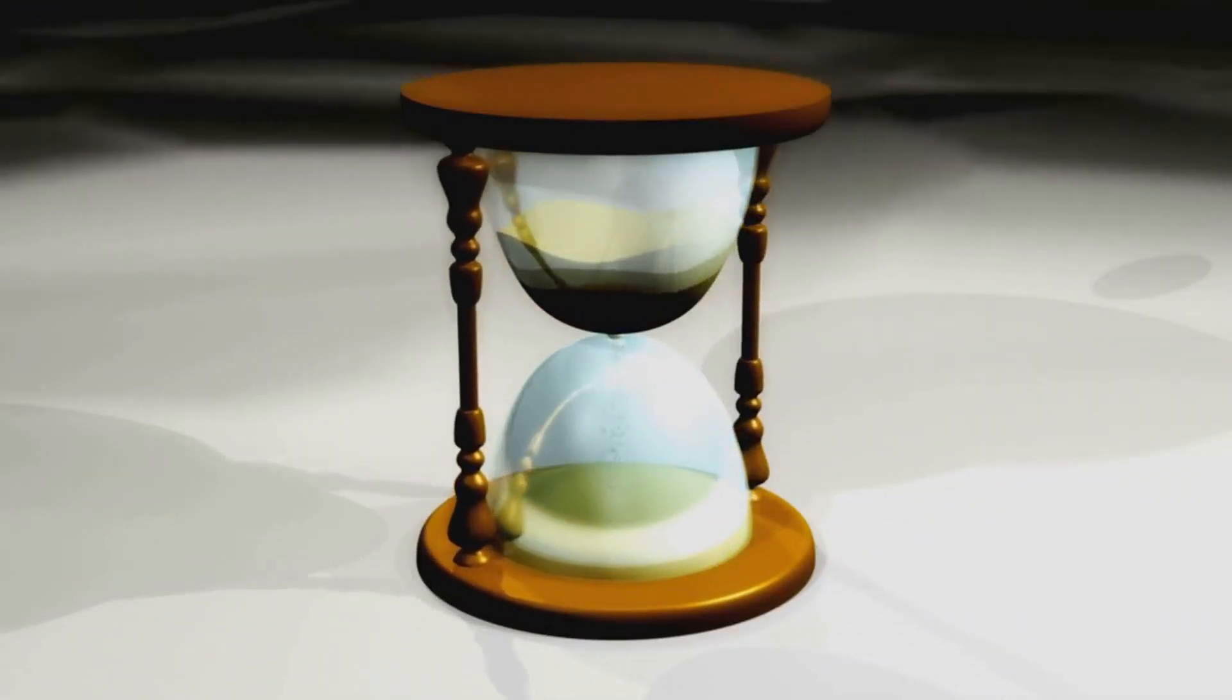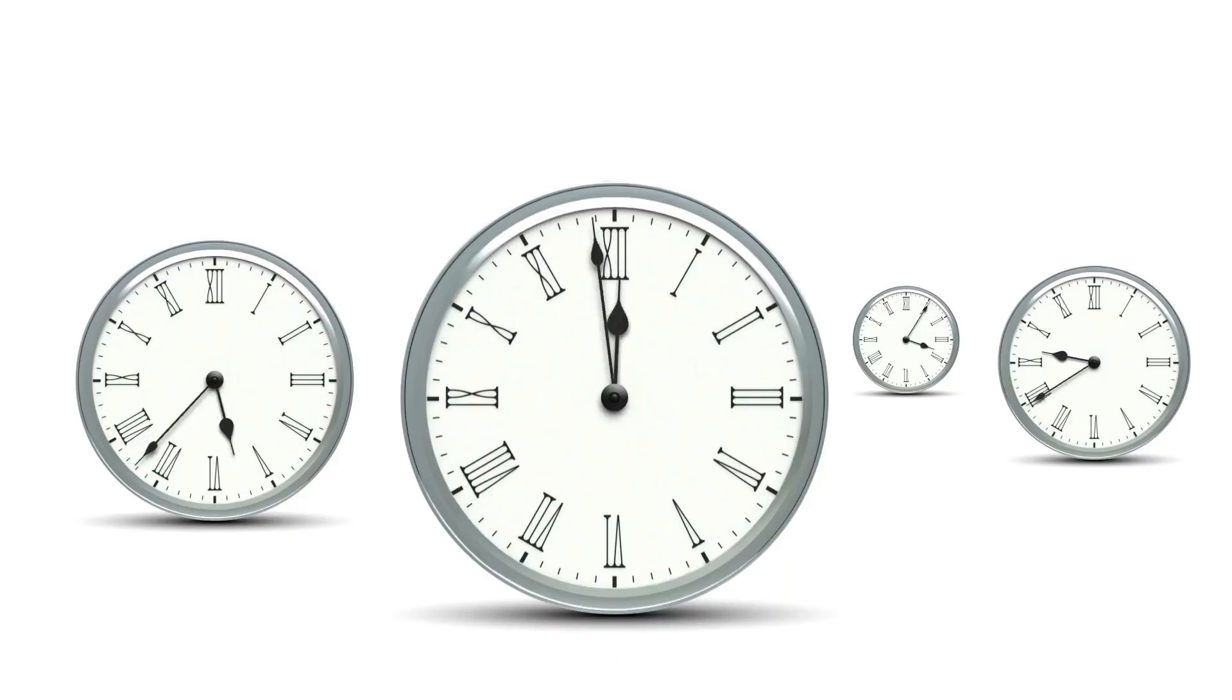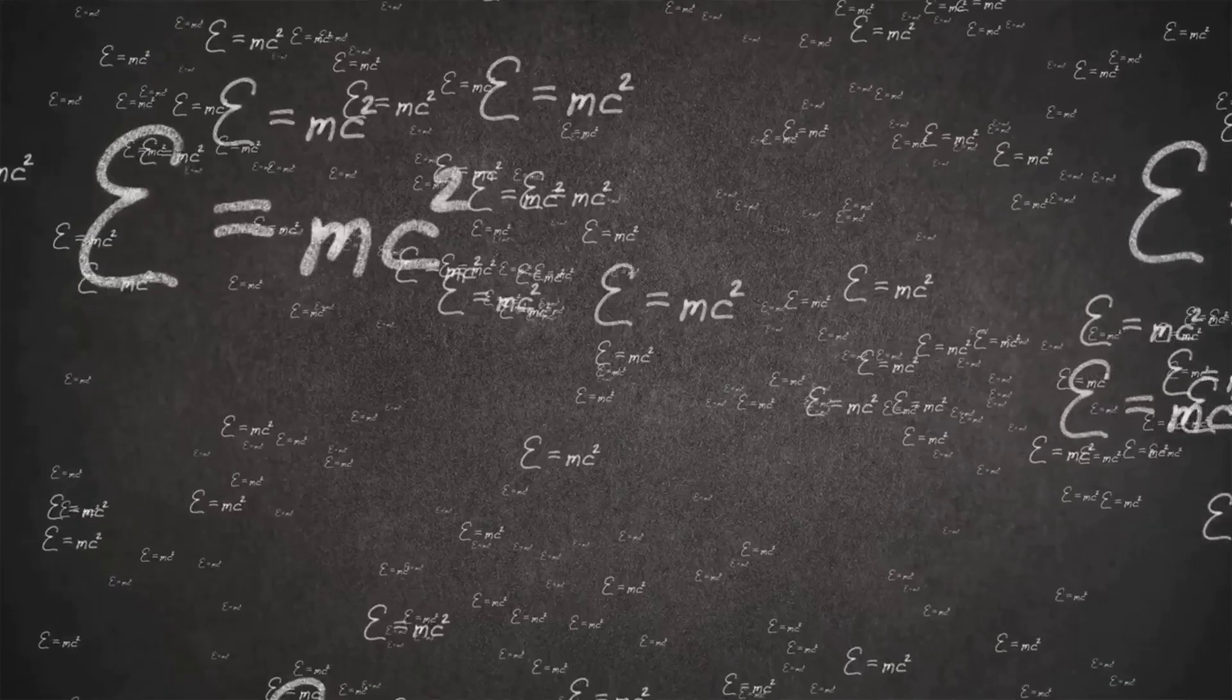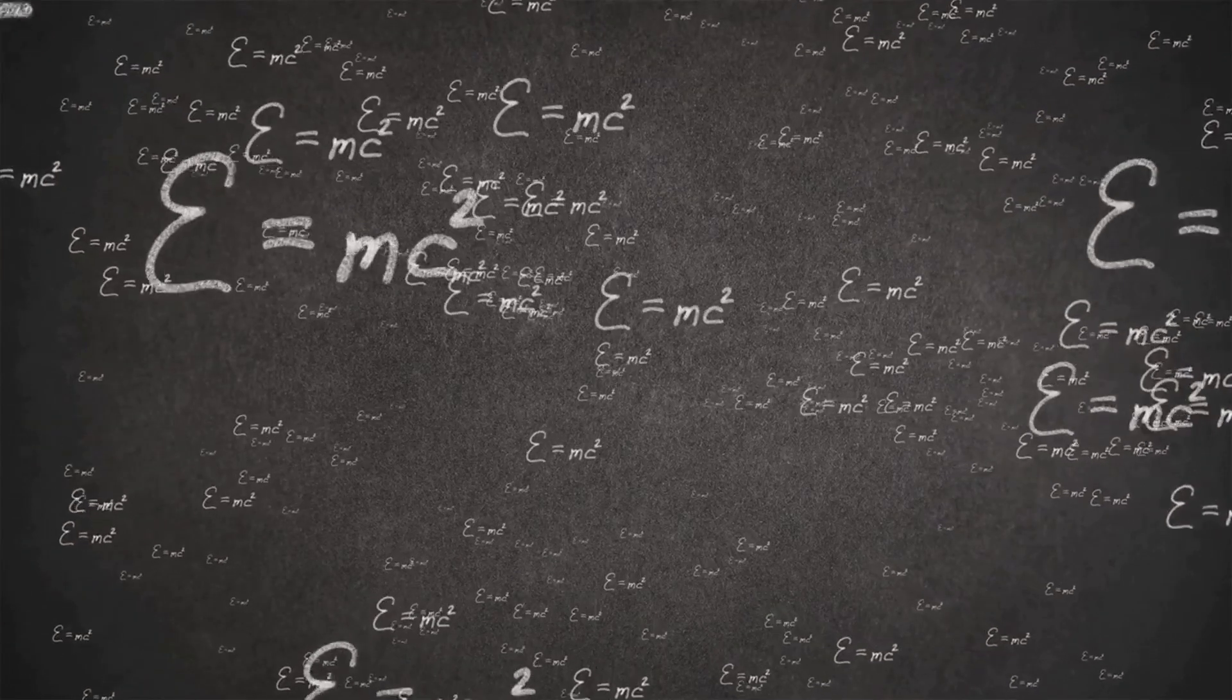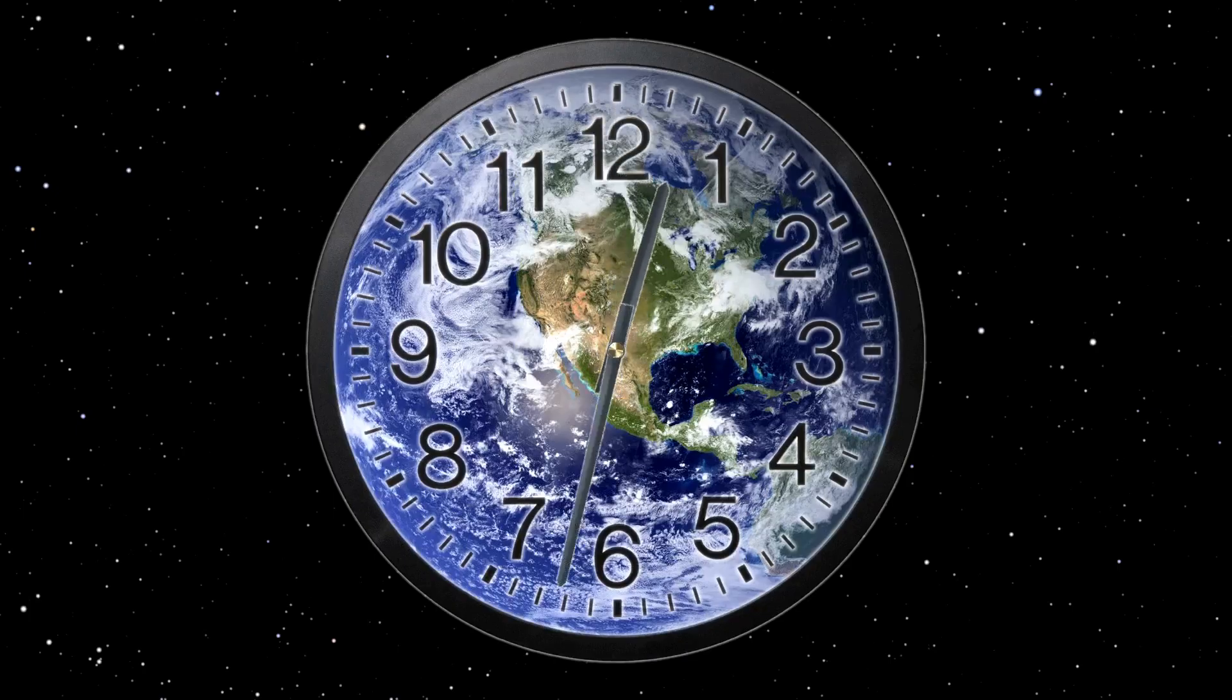One of the most important discoveries in physics is that time is not absolute but relative. This means that time can pass at different rates for different observers depending on their relative motion. This mind-blowing concept was first proposed by Albert Einstein in his theory of special relativity. Einstein realized that time is intertwined with space, forming a four-dimensional fabric called space-time.